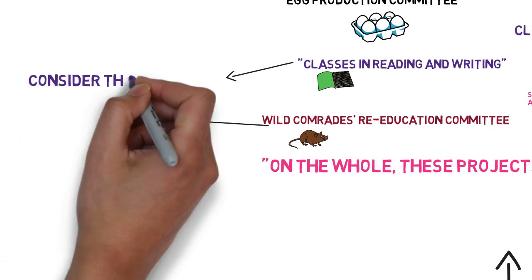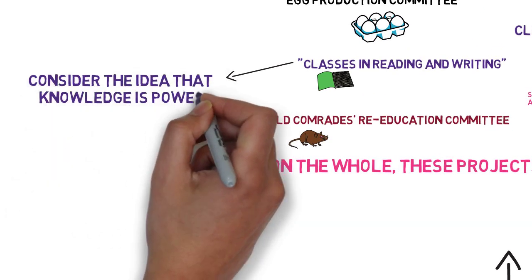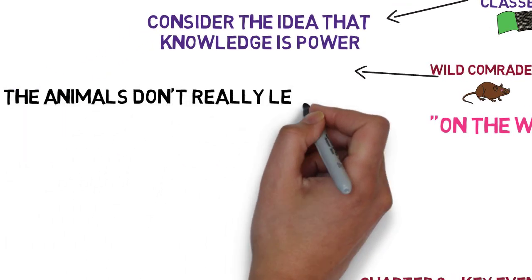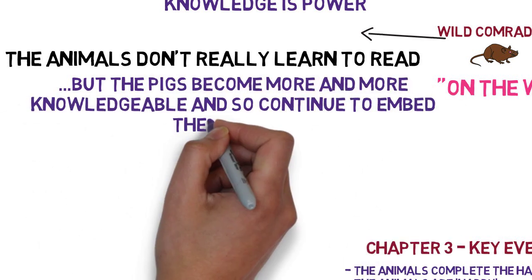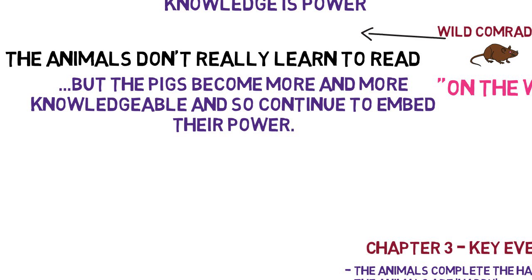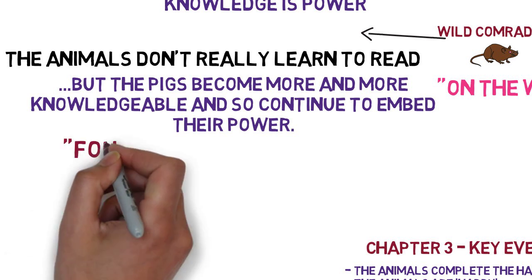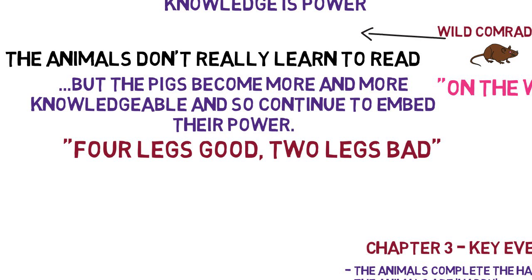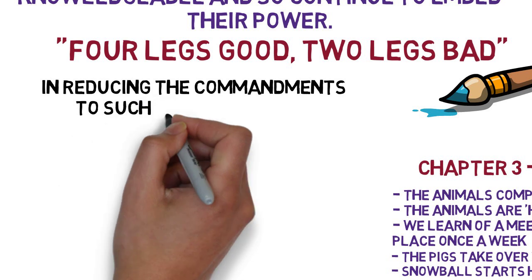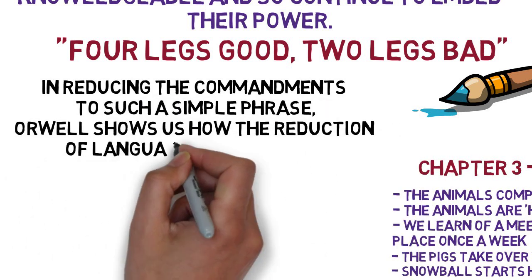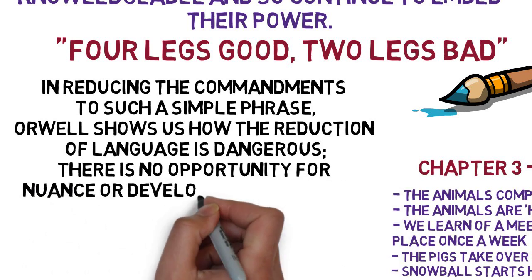Knowledge is power — a theme that comes up a lot in the novel. The animals don't really learn to read, but the pigs become more and more knowledgeable and so continue to embed their power while the other animals remain disempowered. It's also in this chapter that Snowball reduces the commandments to the maxim 'four legs good, two legs bad.' A maxim is a simple rule, easy to say and remember. In reducing the commandments to such a simple phrase, Orwell shows us how the reduction of language is dangerous — there's no opportunity for nuance or developed thinking with this simplistic maxim.